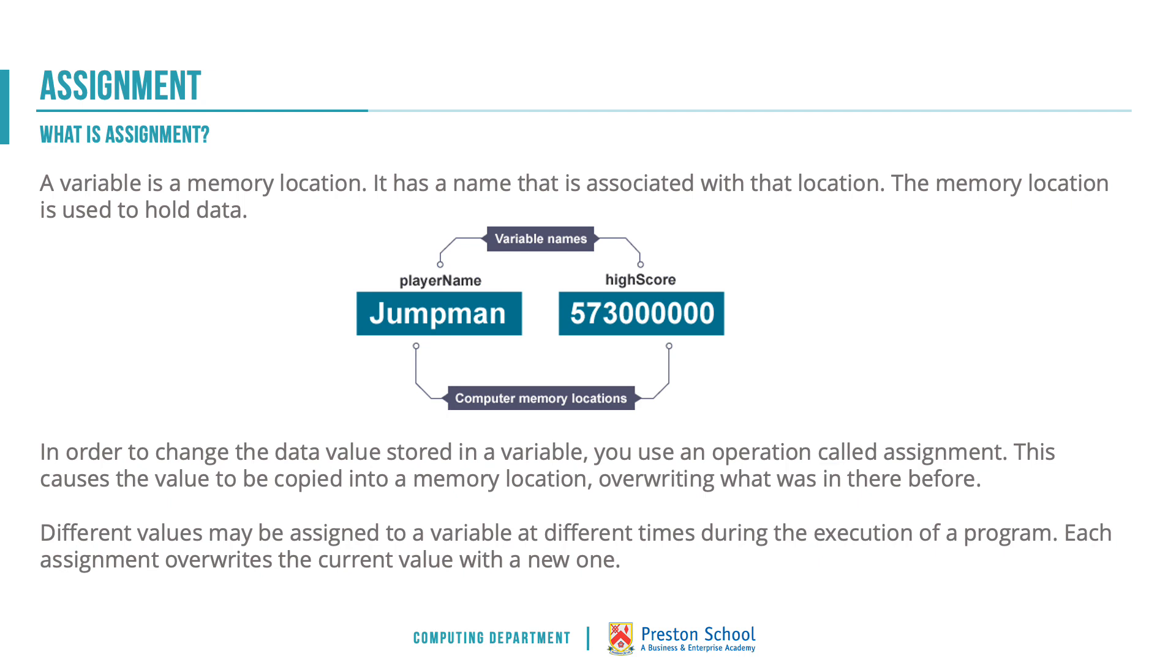If we look at the example on the screen, Jumpman and the high score, we're assigning the high score number into the high score variable, and we're assigning Jumpman into the player name variable. Those are both memory slots. Those are places, you know physical storage locations within the computer.